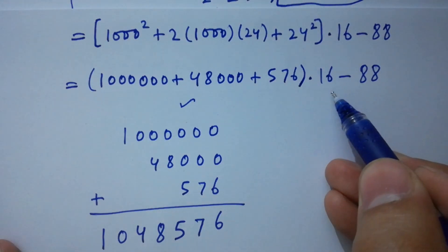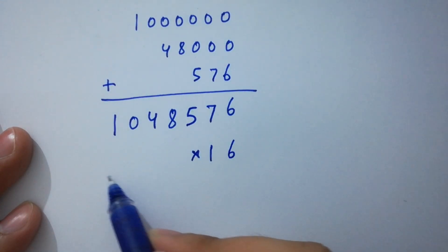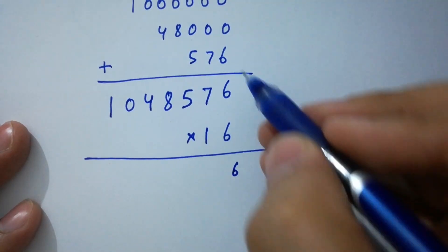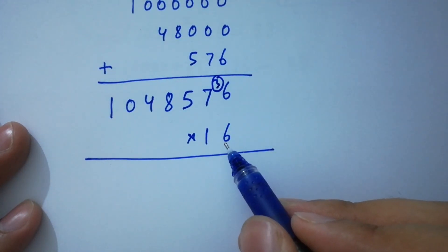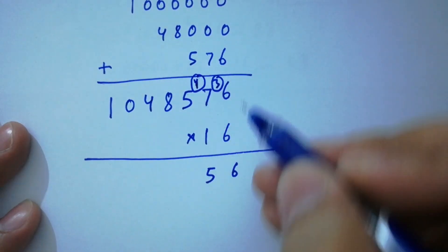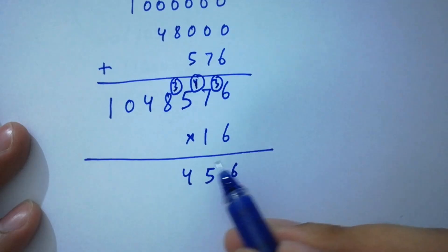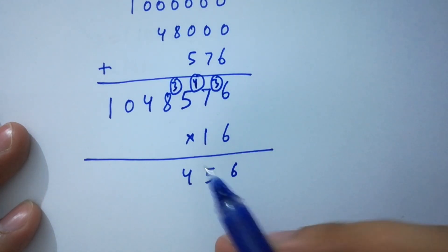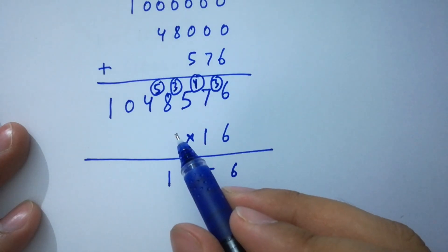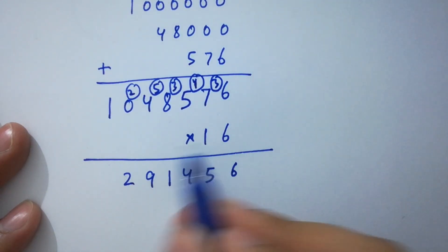Multiplying 1,048,576 by 16: first multiply by 6 — working through the digits gives 6,291,456. Then multiply by 1 (representing the tens digit) — that gives 1,048,576 shifted one place.